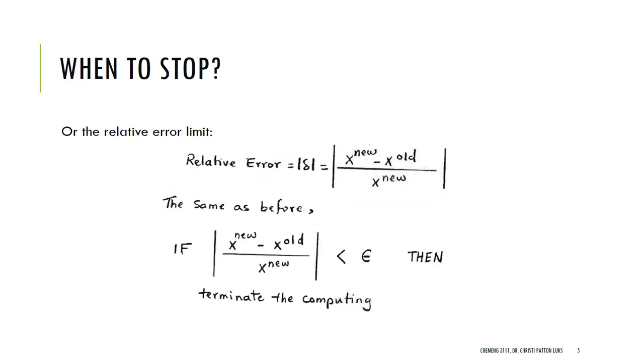We're going to stop pretty much the same way we've been doing, using relative error. We're going to say that x new minus x old divided by x new needs to be less than our epsilon value, our tolerance.